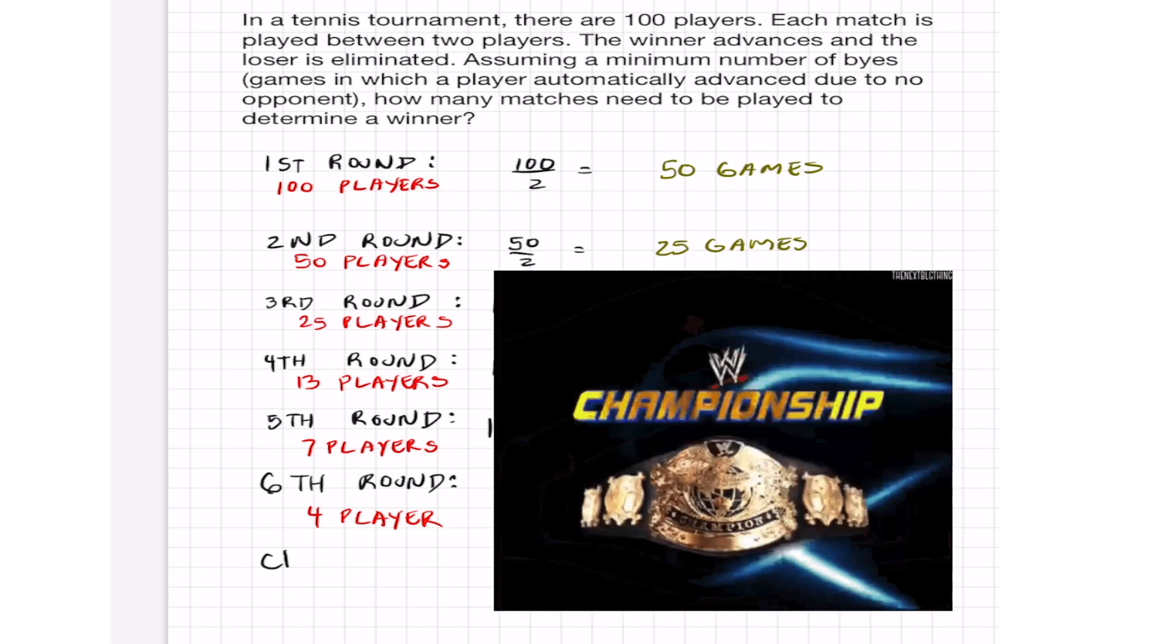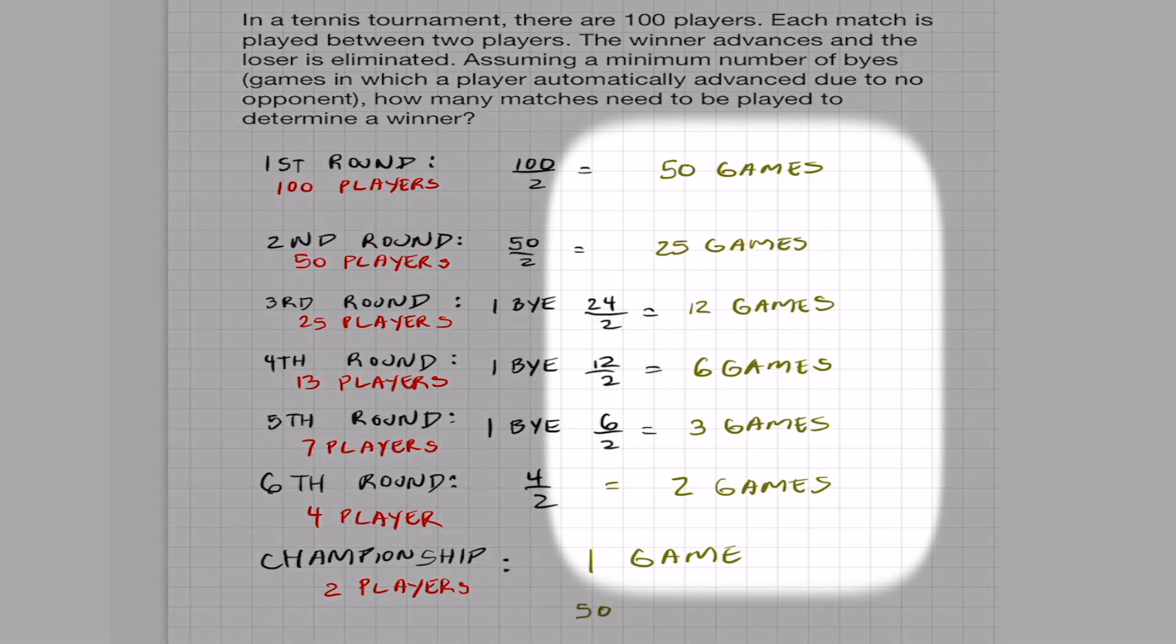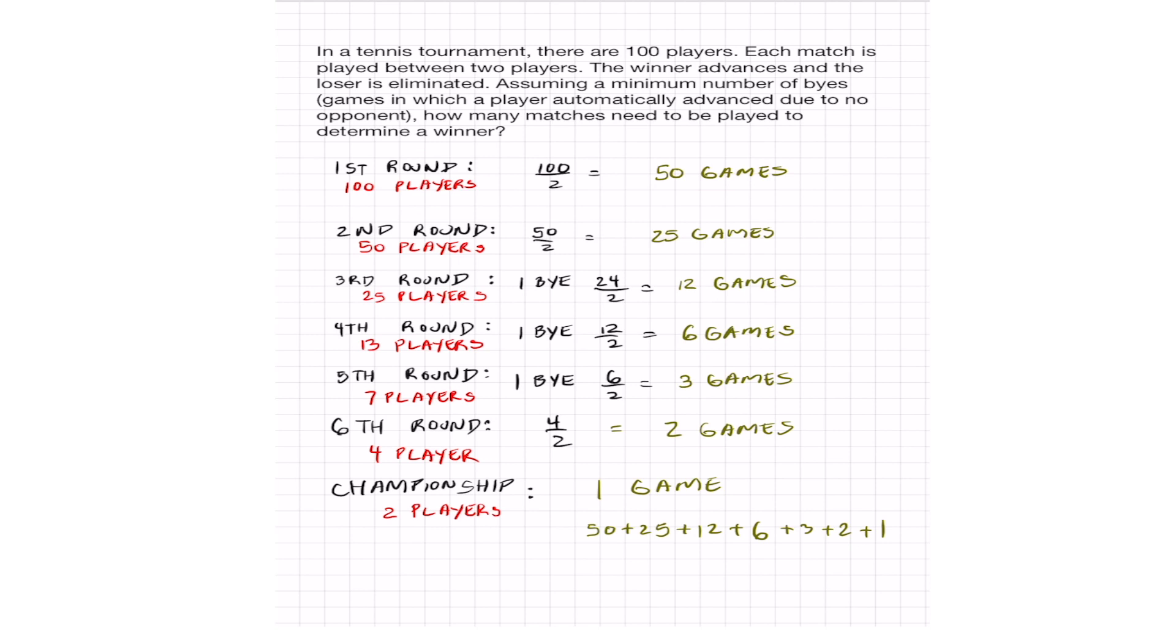And finally, the championship. We got 2 players left. That is just one game that needs to be played to determine the winner. Figure out how many games are played in total. We just add 50 plus 25 plus 12 plus 6 plus 3 plus 2. And don't forget the championship game plus 1, which is a grand total of 99 games.